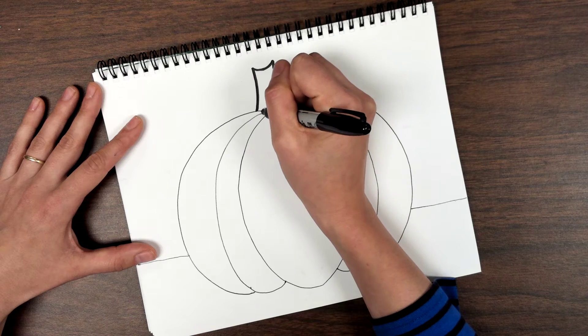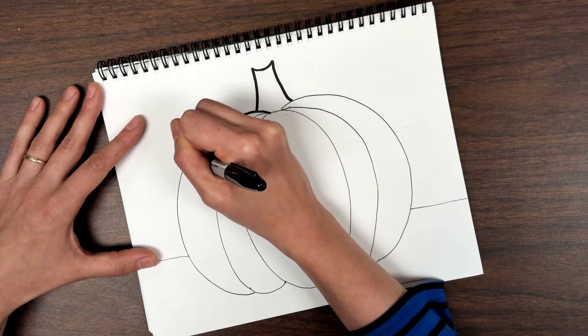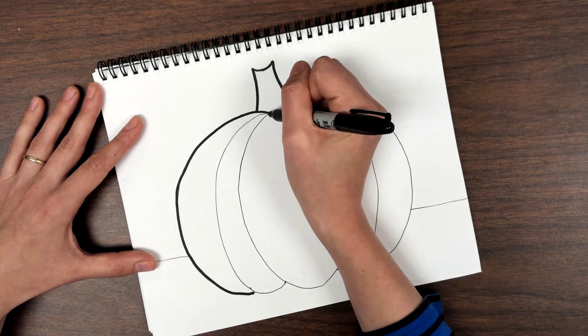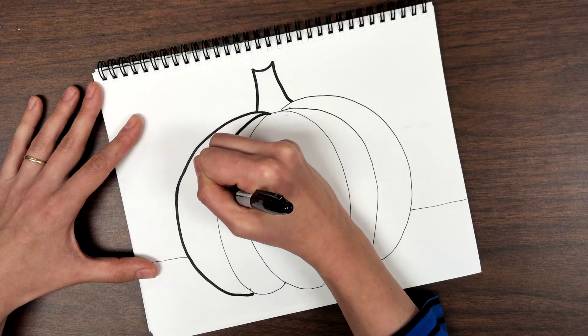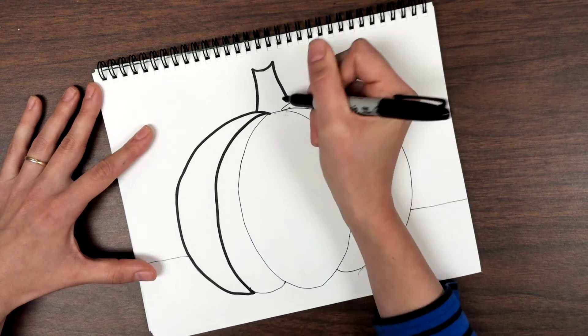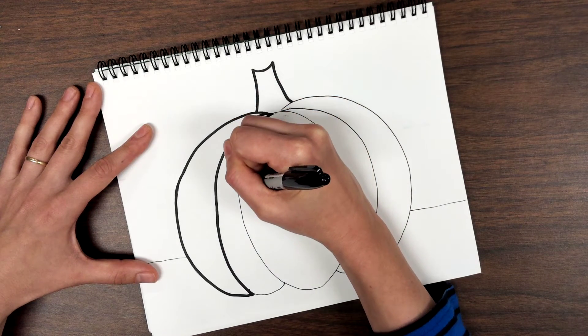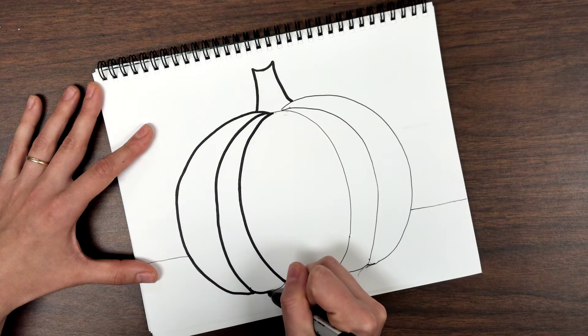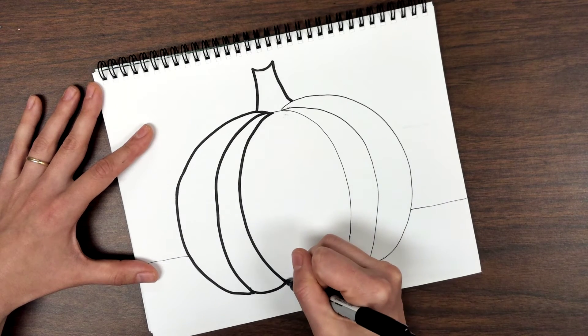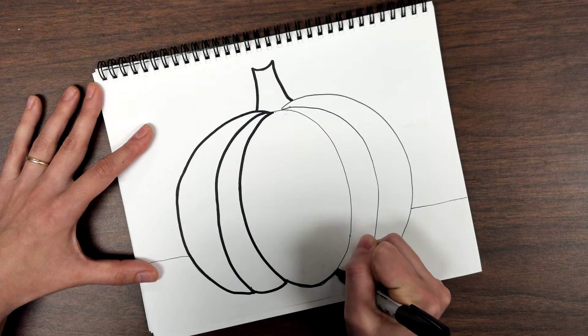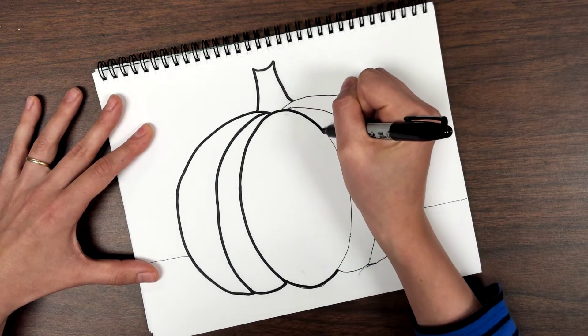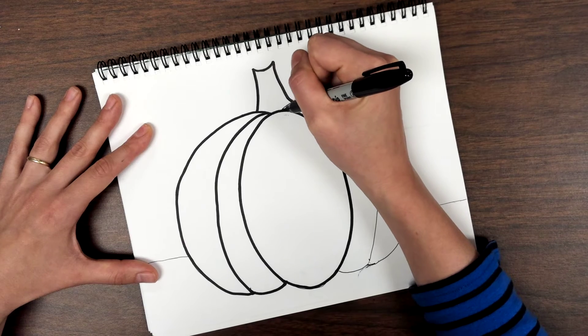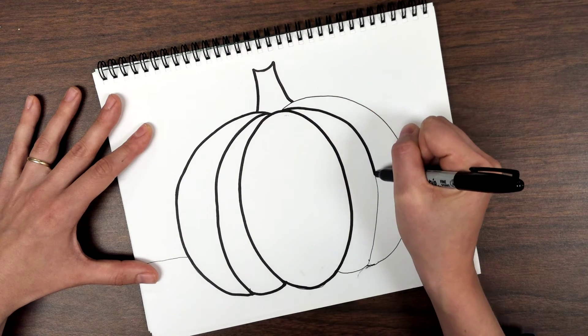So doing one section at a time, I want you to trace all of your pencil lines. Even working from one side of the paper and going all the way across. I have a lot of students who forget this little part right here, so don't forget the bottom of the pumpkin. Take your time with this step. Try your best to stay on top of the pencil lines that you've already created.